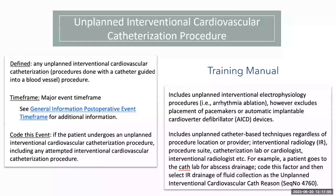Moving on to unplanned interventional cardiovascular catheterization procedure. The definition has been updated to include any catheter-guided procedure in a blood vessel. This includes procedures done in a procedure suite, interventional radiology, or the cath lab—and may be performed by an interventional radiologist, cardiologist, or others. Unplanned interventional EP procedures such as ablations are included, but pacemaker or ICD placements are not. It does not matter where the procedure occurs or who performs it.